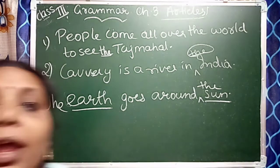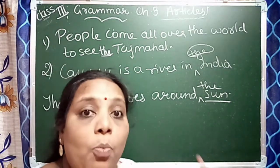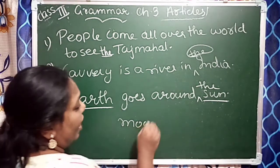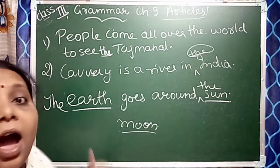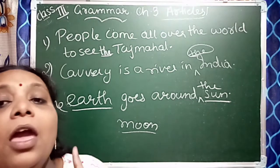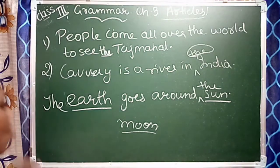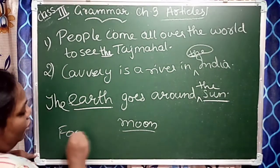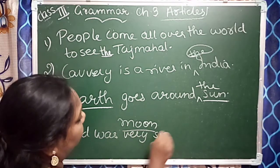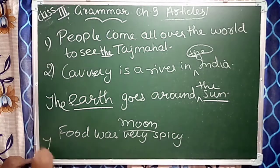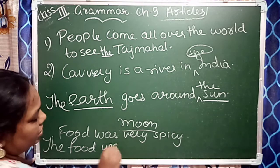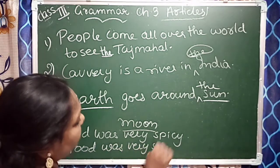Fourth one: 'A rocket can take you to moon.' Moon is unique, so we write 'to the moon'. Fifth one: 'Food was very spicy.' We add 'the' — 'The food was very spicy.'